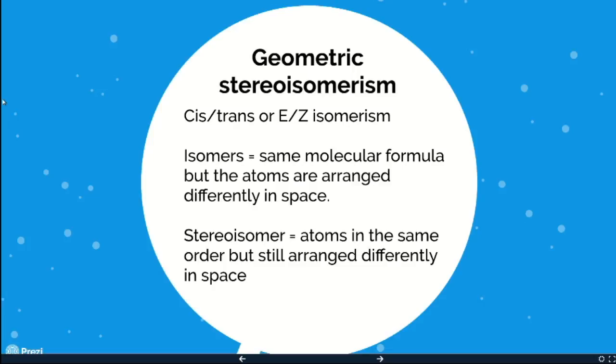So who's heard of cis-trans isomerism? Most of you. So isomers, I've kind of given the game away, but these are molecules that have the same molecular formula, but they are arranged differently in space. And stereoisomers, which is the crucial thing in the context of chemotherapy, in the same order, but arranged differently in space because they don't have the freedom to move in space. Cis-trans, cis just means same side, trans means across.